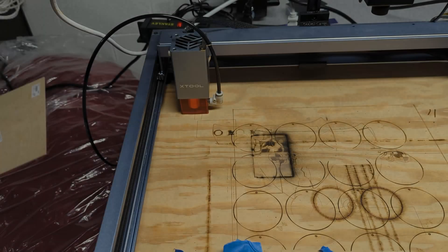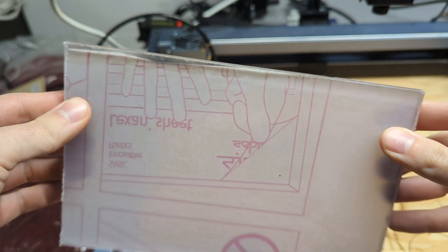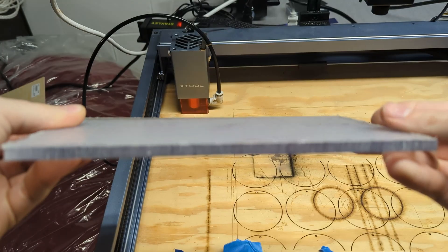Now, a lot of people say you can't cut clear Lexan, you can't mark clear Lexan on a diode laser, but I have some right here. It's a quarter inch thick, and we're going to give it a try.